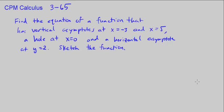This is CPM Calculus Chapter 3, Number 65. Find the equation of a function that has vertical asymptotes at x equals negative 3 and x equals 5, a hole at x equals 0, and a horizontal asymptote at y equals 2. Sketch the function.